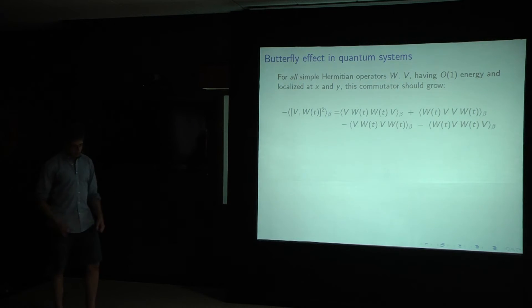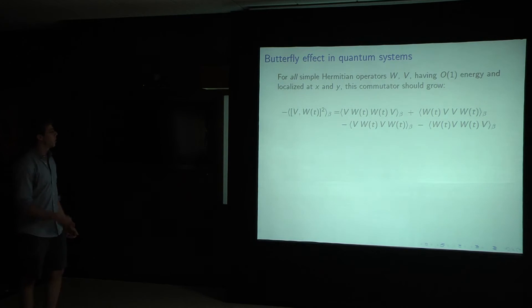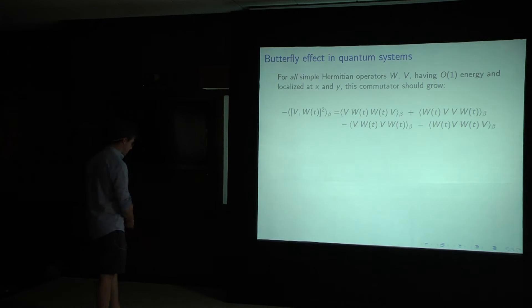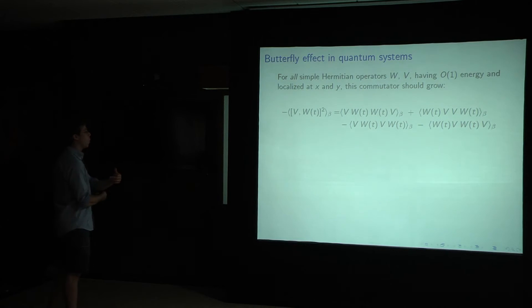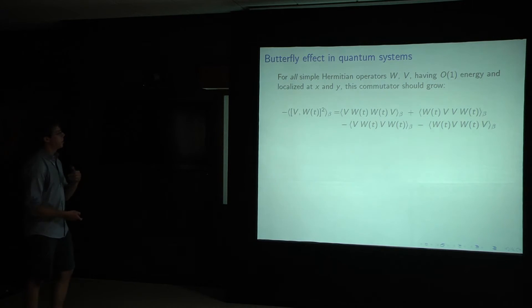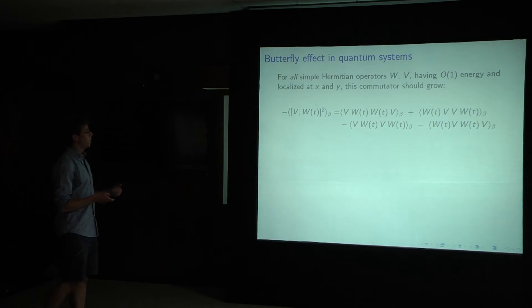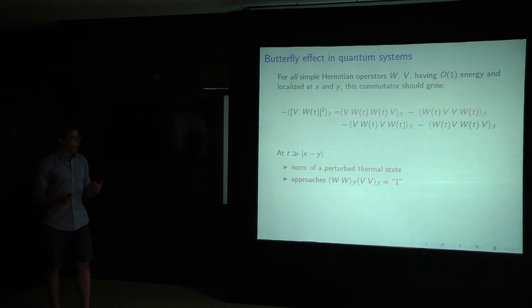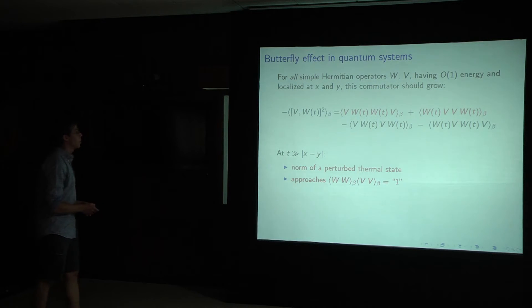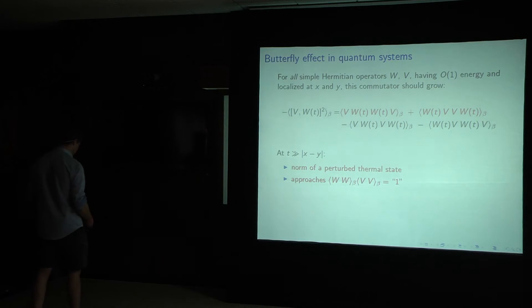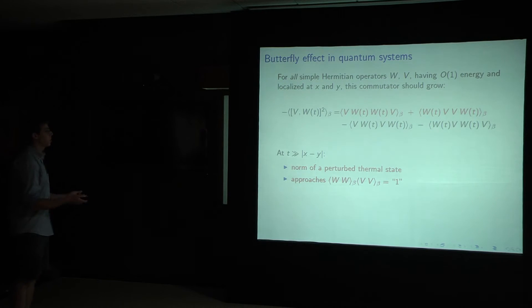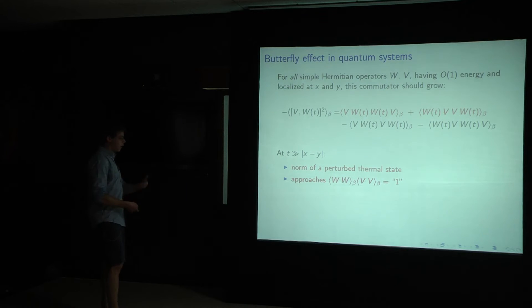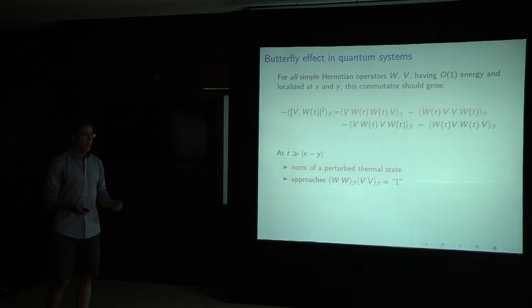So we can expand this in terms of correlation functions, which is a useful thing to do, for instance, for conformal field theory, which is where we're going to go next. And what we see is there are two different types of terms here. On the top, we have terms that are like a norm of a perturbed thermal state. In this state, let's focus on the one on the left here. It's a thermal state. I apply the operator V. It's a small perturbation. I evolve in time. It's a thermal system. So the system thermalizes, returns to equilibrium. And then I apply the perturbation W. And I'm just taking, essentially, the norm of this state.